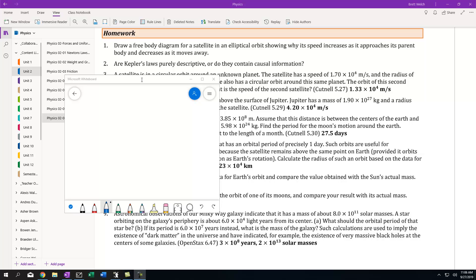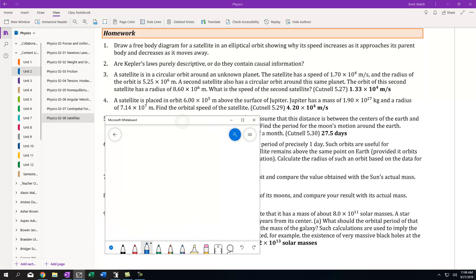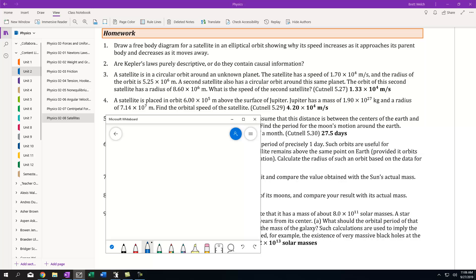We're working on problem 2.8, just getting a little bit of help here with setup. We're going to do question number four. We have a satellite that's going to orbit around the surface of Jupiter. We know Jupiter's mass and radius, and when we go to find the orbital speed,